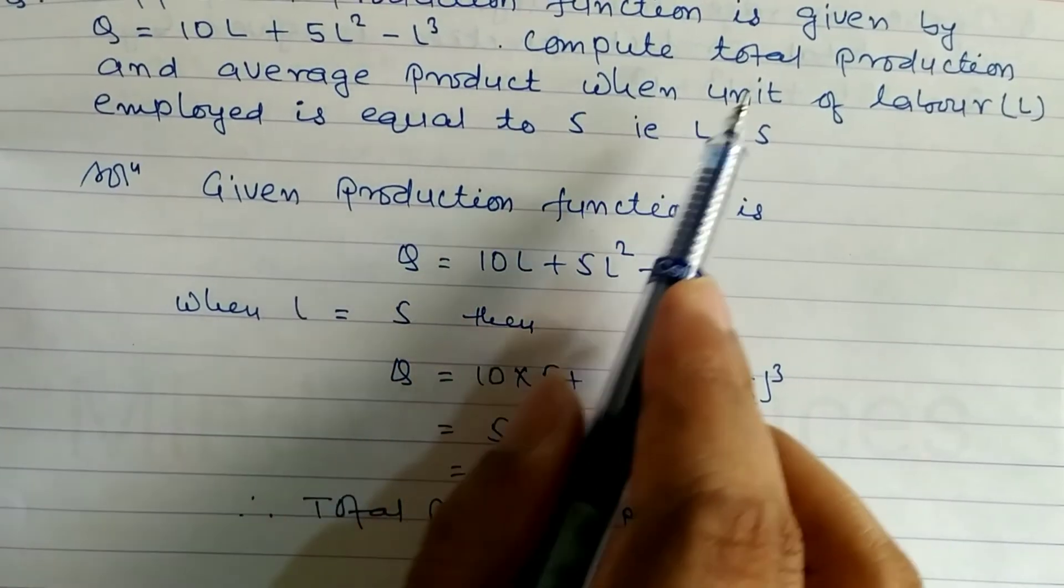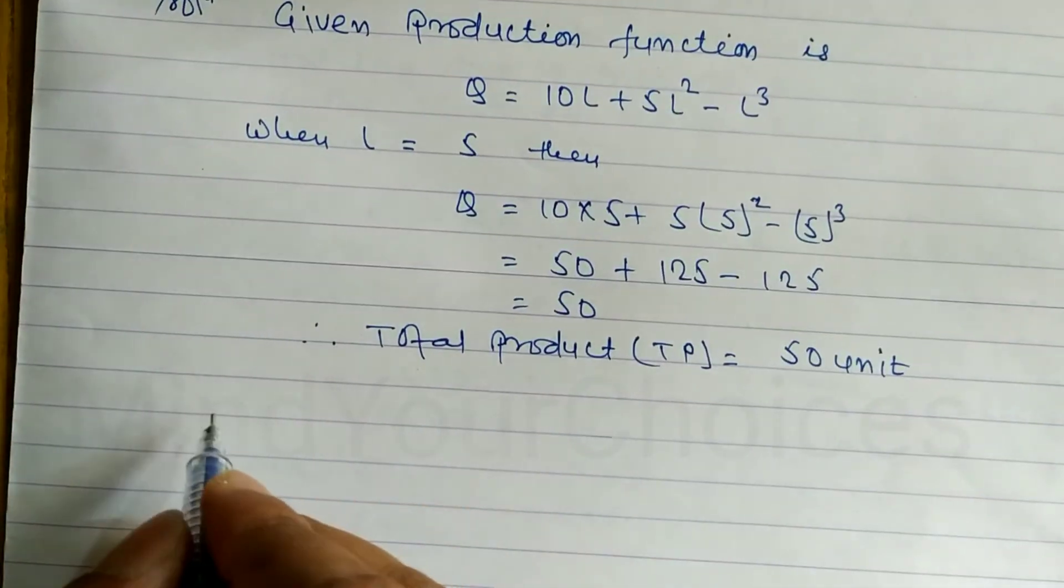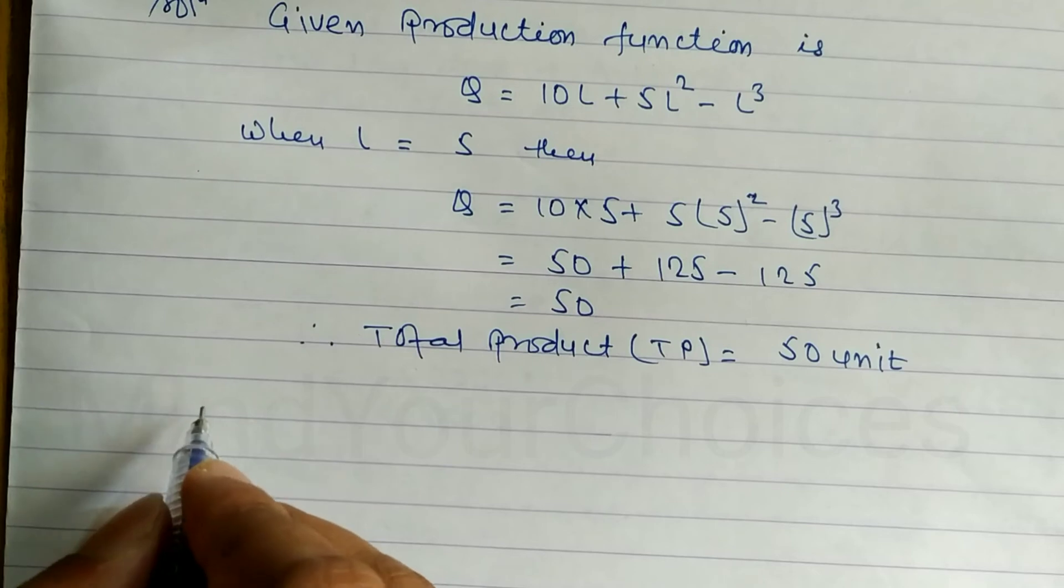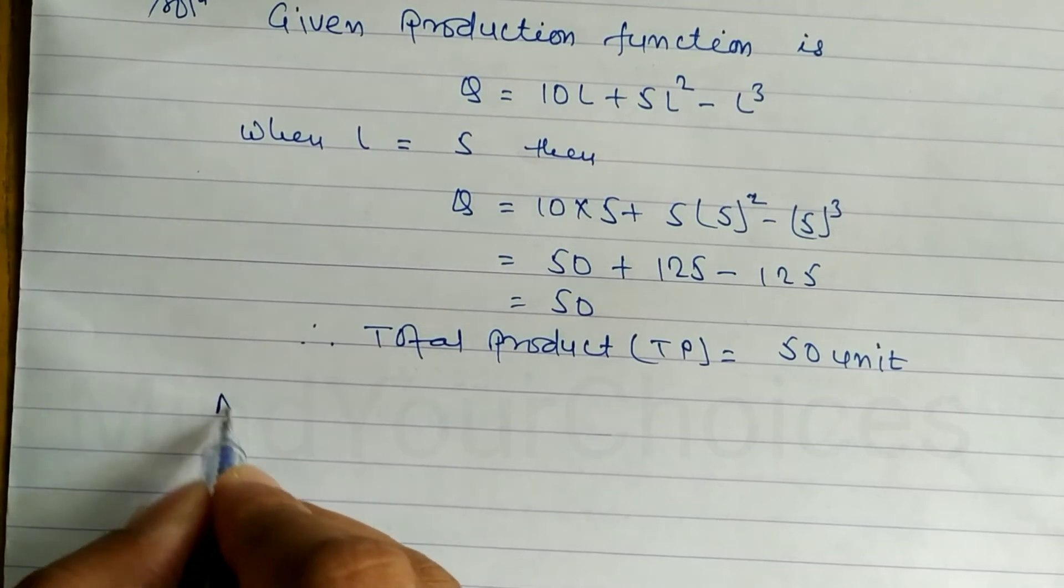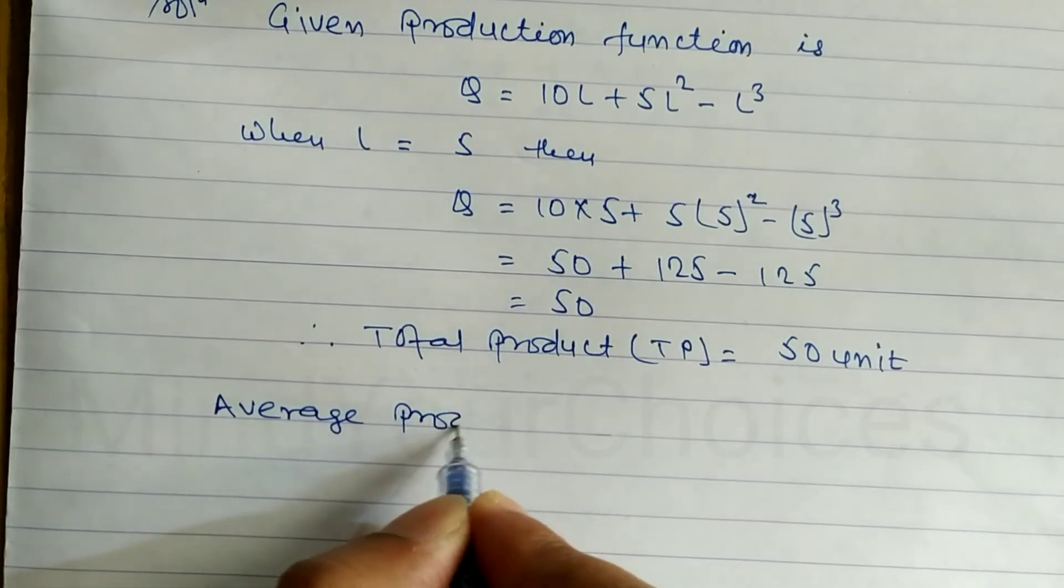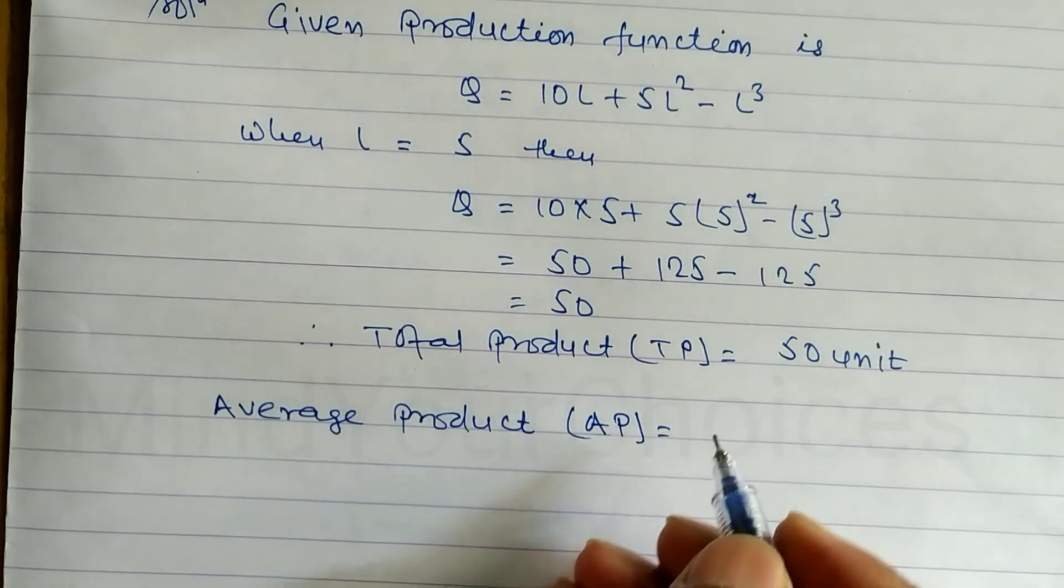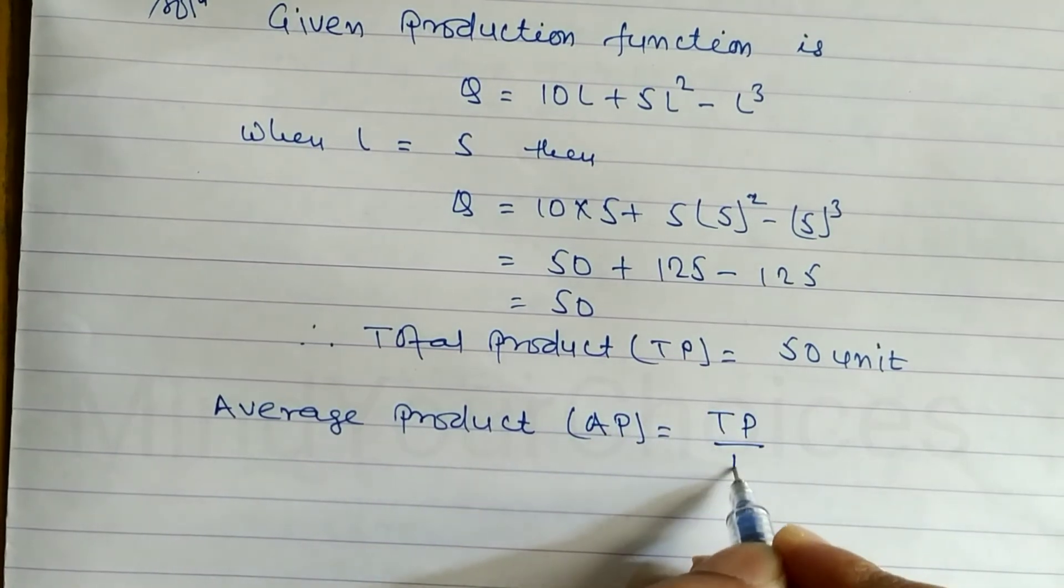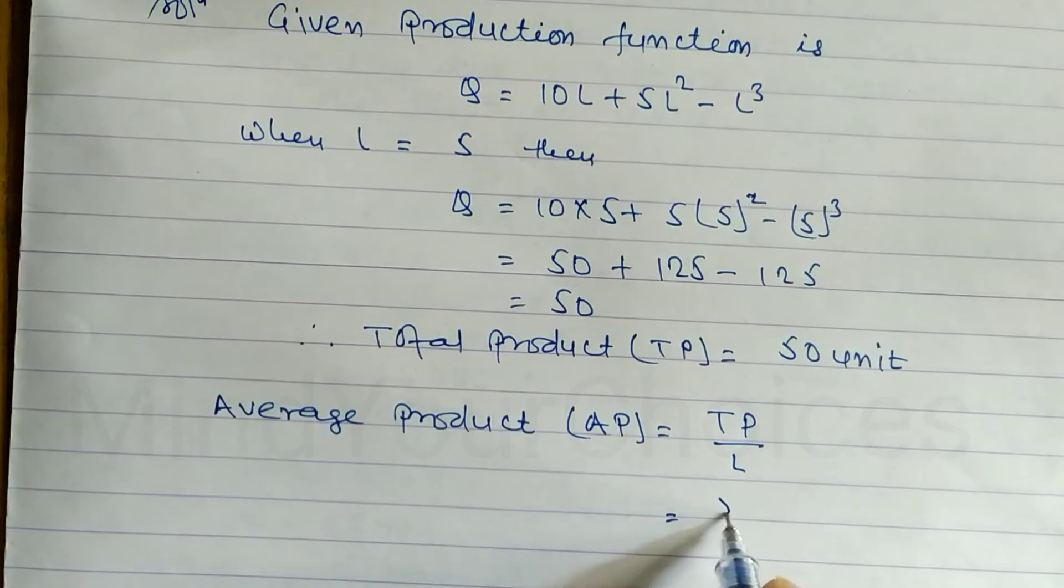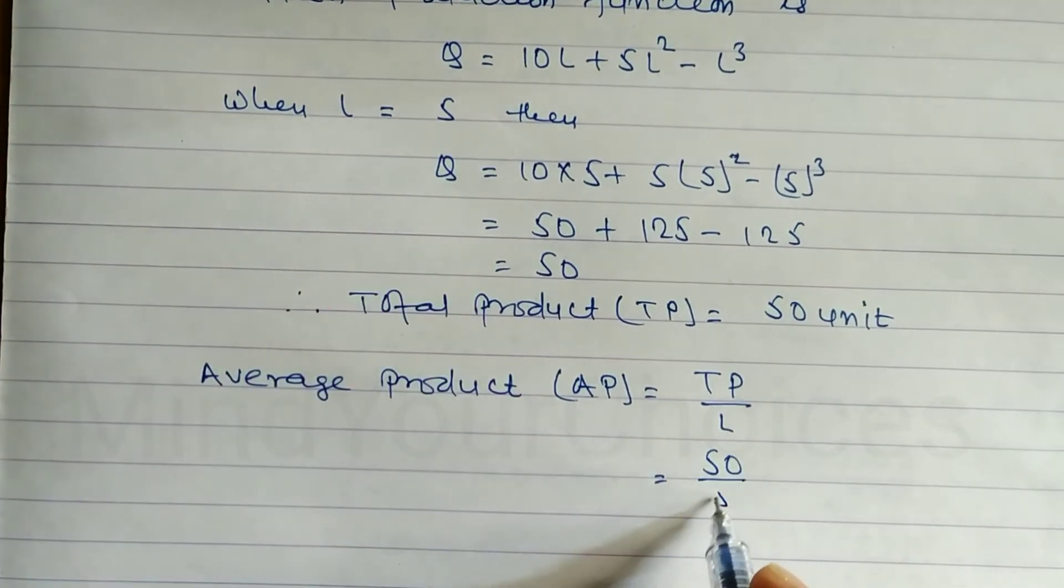Next we have to find average product. Total product (TP) divided by labor to find average product. So average product AP equals TP by L, which is 50 by L. When L is 5, we divide and get 10 units.